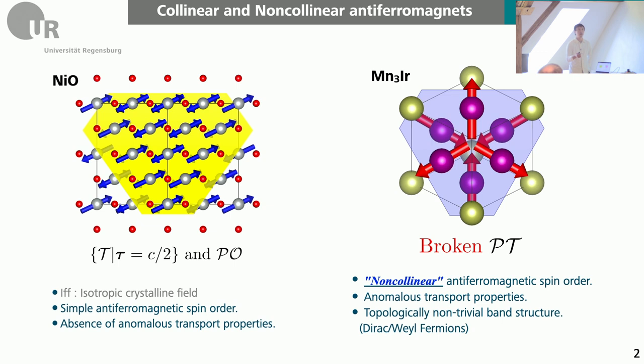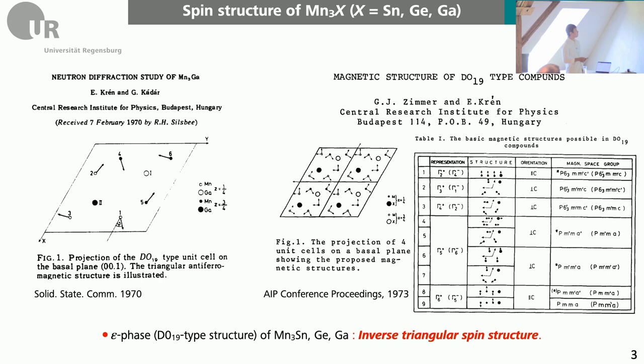The spin structure of this material has been known for a while. They started studying this material as early as 1970 using neutron diffraction techniques. They realized that all three materials, if they have this special hexagonal structure which we call the epsilon phase, could have this inverse triangular spin structure.